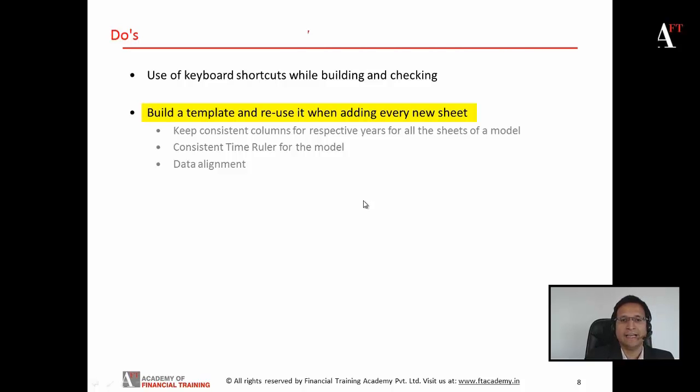Always build a template first and then reuse it whenever adding a new sheet or new calculation in your model. This ensures that you have consistent columns for all the years in your model. For example, if you have a projection period from 2014 to 2020 and in the template you have dedicated column F for 2014 and column L for 2020, then if you reuse the template, your years will always be represented by these columns.